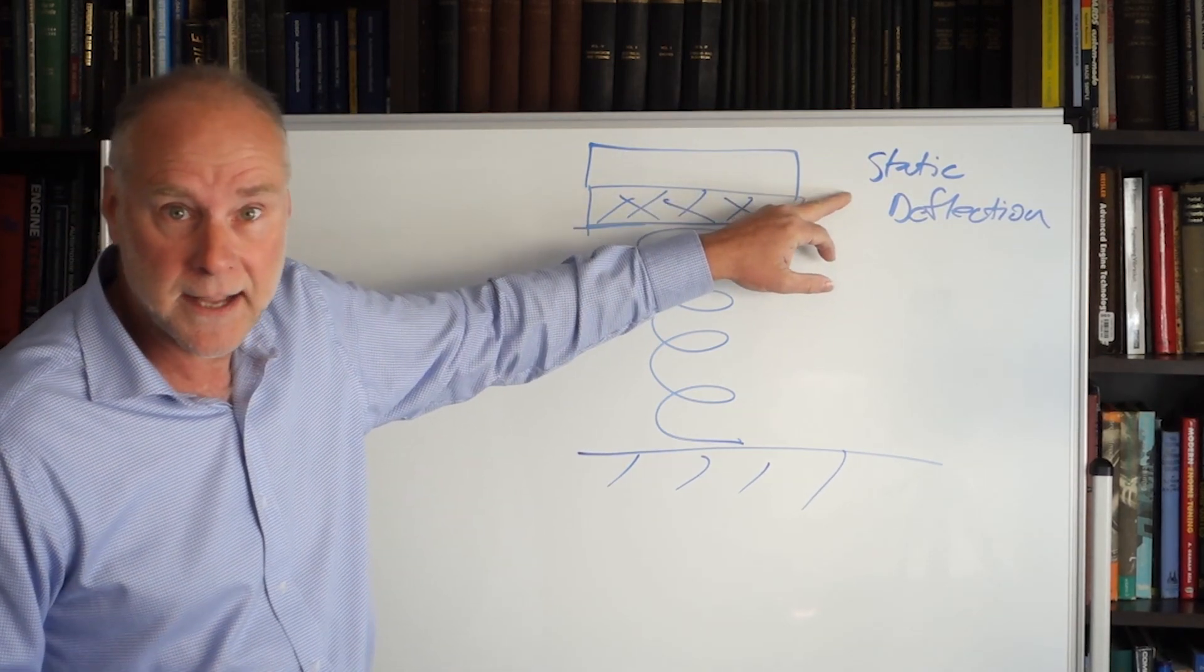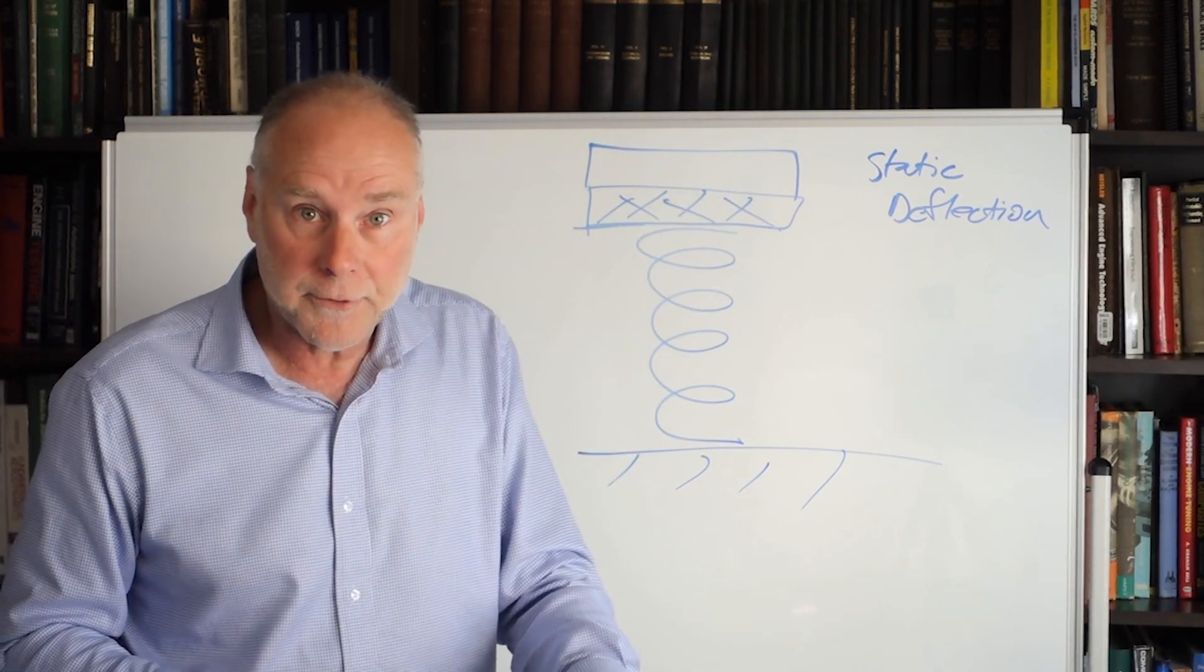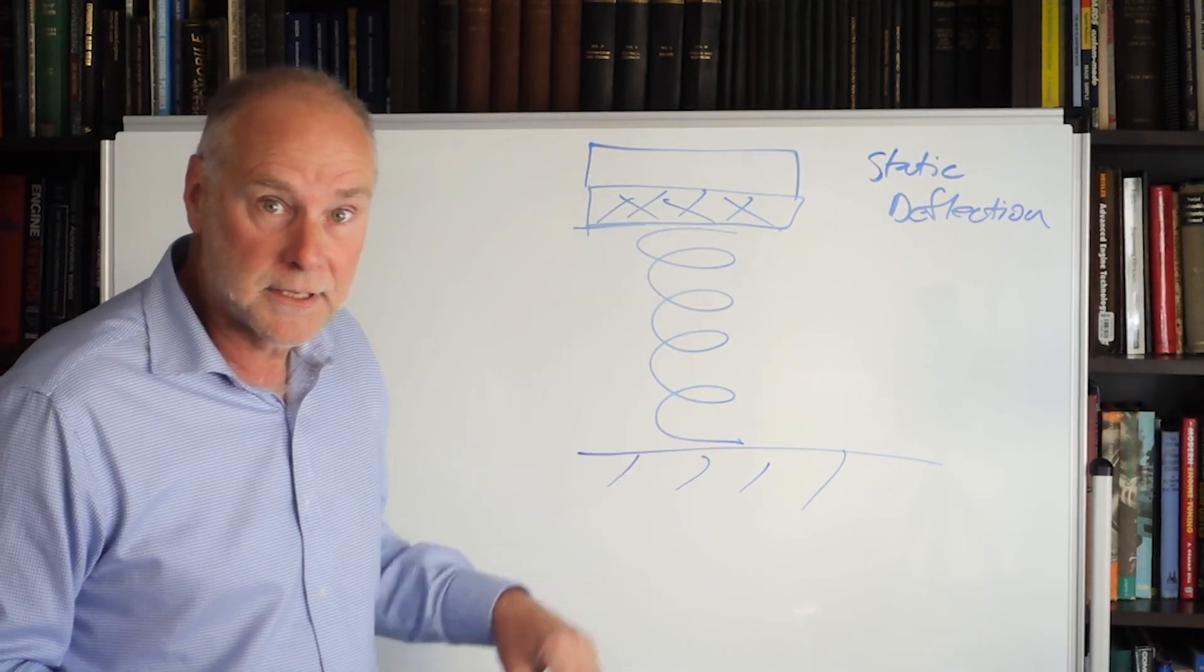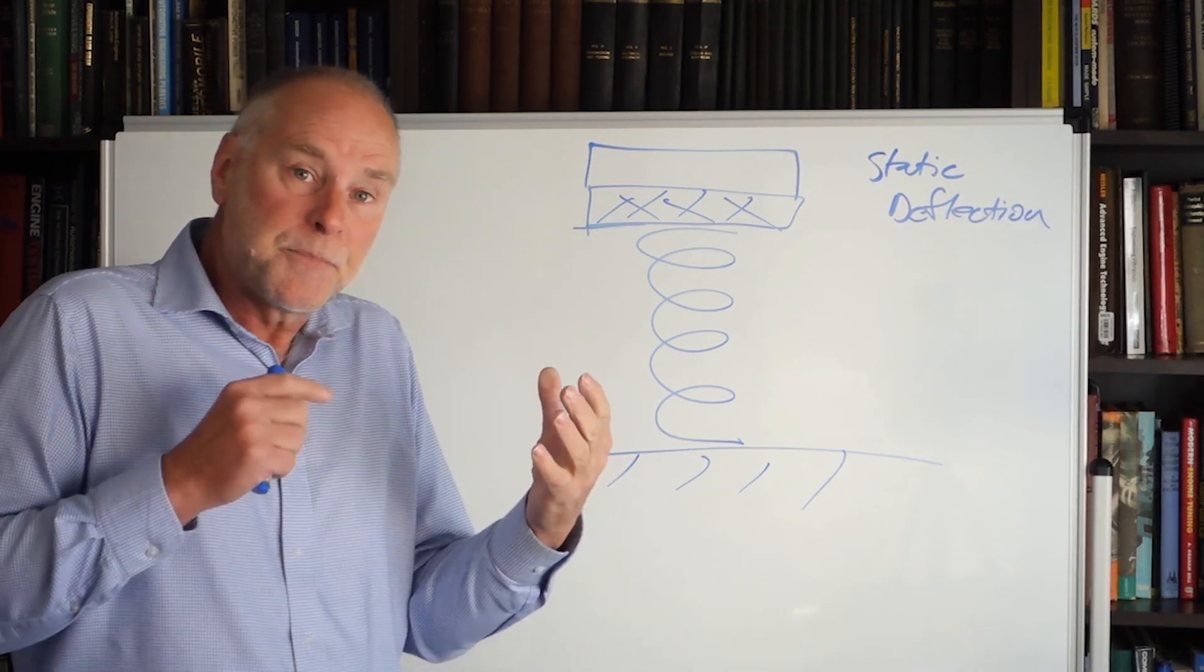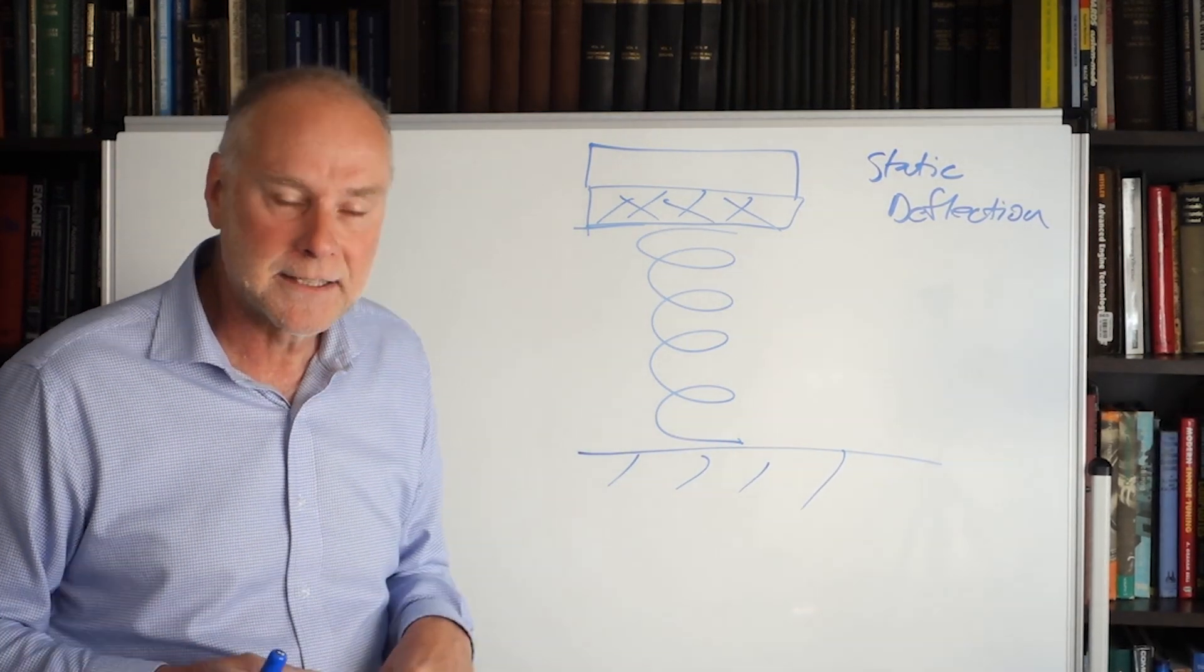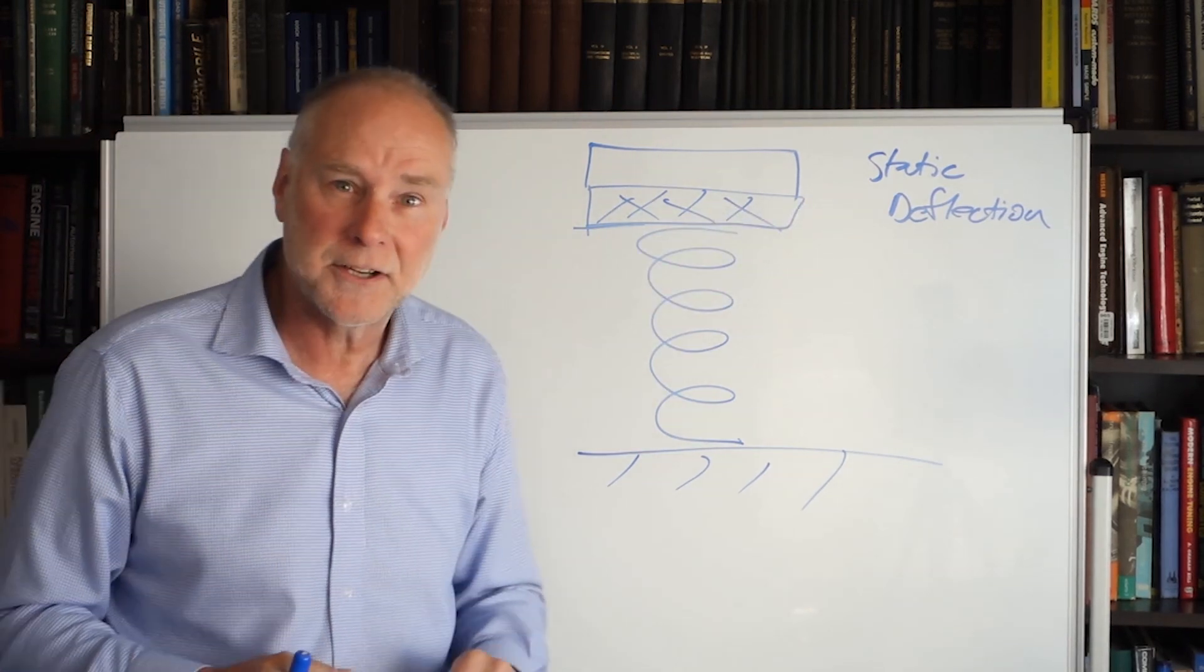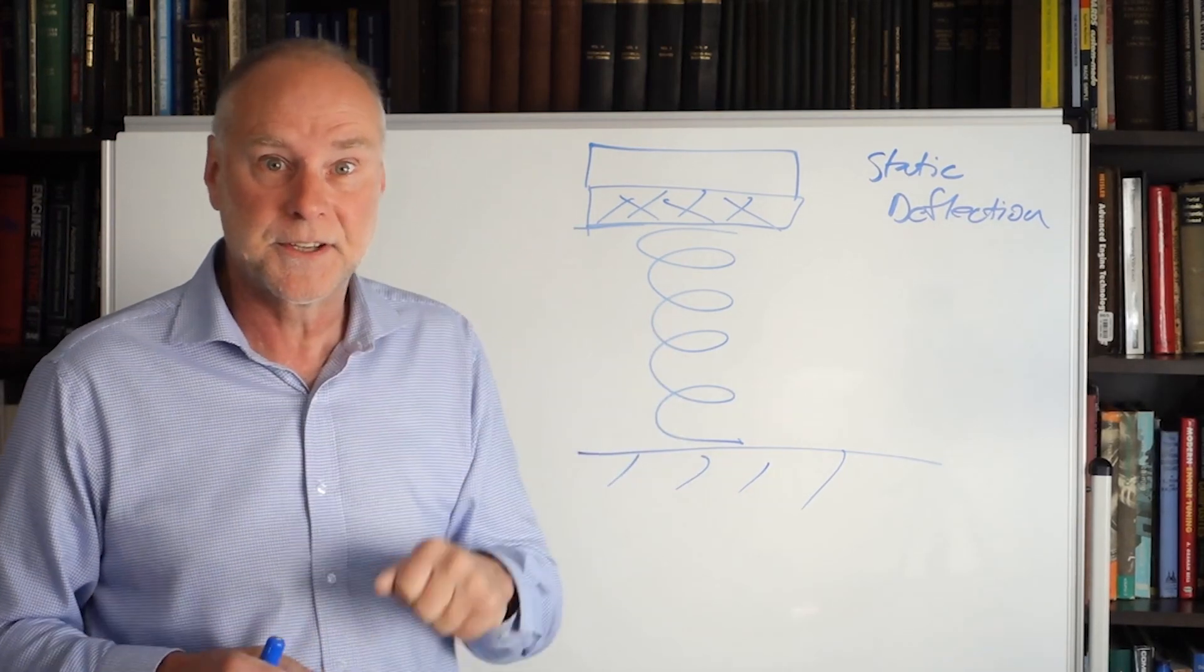The bigger the static deflection of the spring when the weight is put on it, the lower the natural frequency, and therefore the softer the suspension is. The bigger the static deflection, the softer the system is in its behavior, and therefore the lower the natural frequency. So straight away, we can see how important static deflection is, how much the system actually compresses when the weight is put on it, because that's a good indicator. In fact, there's a mathematical relationship between static deflection and natural frequency, so that's a good indicator of how stiff or soft the system actually is.